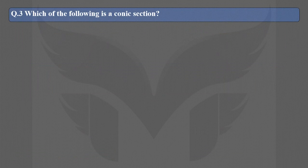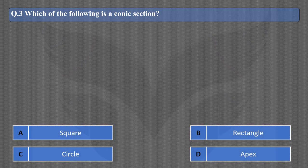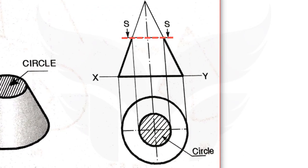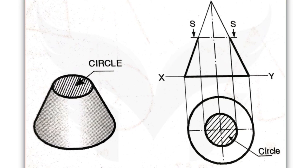Next question: Which of the following is a conic section? Before we see which is the correct option, let's understand what conic section means. A conic section is a curve obtained by cutting a cone with the help of an imaginary cutting plane. Depending upon the position and angle of the cutting plane, we get different sections or curves. For example, when cutting plane SS is parallel to the base of the cone, looking at the lower part from the top, the shape we see is a circle. So circle is a conic section, and the correct option is C.